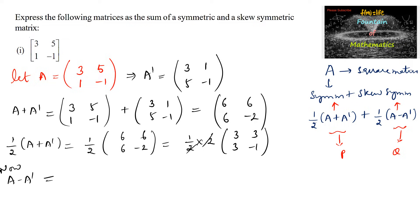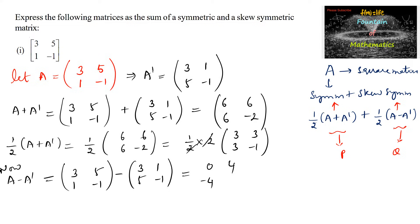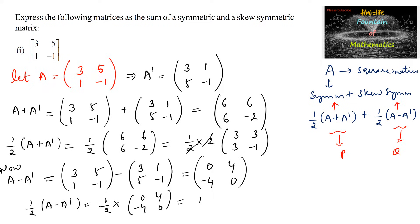Now A minus A transpose equals [3,5;1,-1] minus [3,1;5,-1], which gives 0, 4, negative 4, and 0. So 1/2 times of A minus A transpose equals 1/2 of [0,4;-4,0], and taking 2 common, we get [0,2;-2,0].